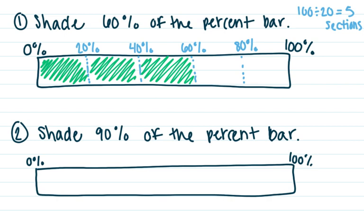So again, to know how many sections that I need in my percent bar, I'm going to ask myself what is one hundred divided by ten. That will tell me how many sections I need, because I'm going to count by ten. And one hundred divided by ten is ten. So I'm going to need to divide my percent bar up into ten sections.